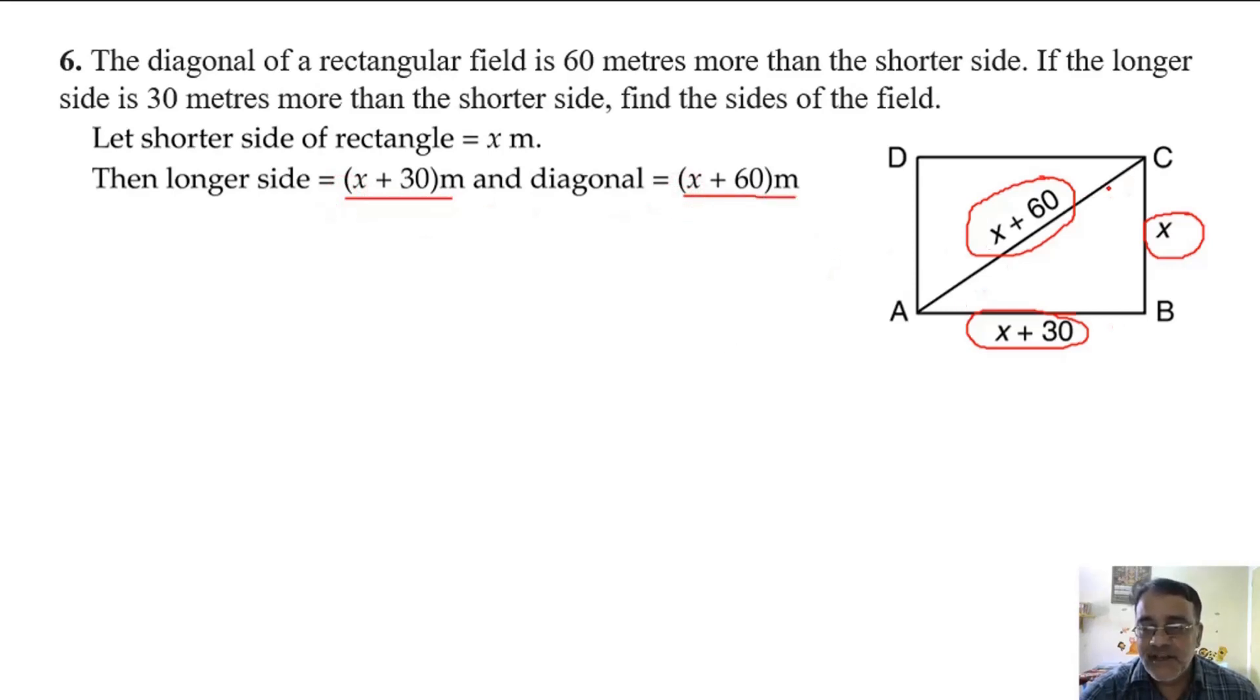Now we have to use Pythagoras theorem. By Pythagoras theorem, AC² equals AB² plus BC². AC is x plus 60, AB is x plus 30, and BC is x.